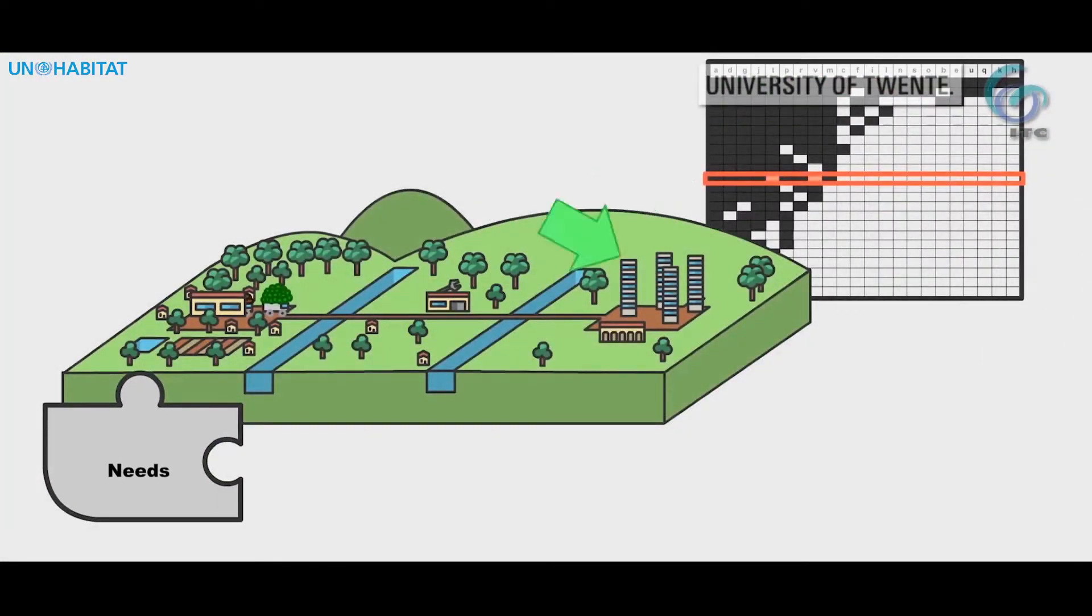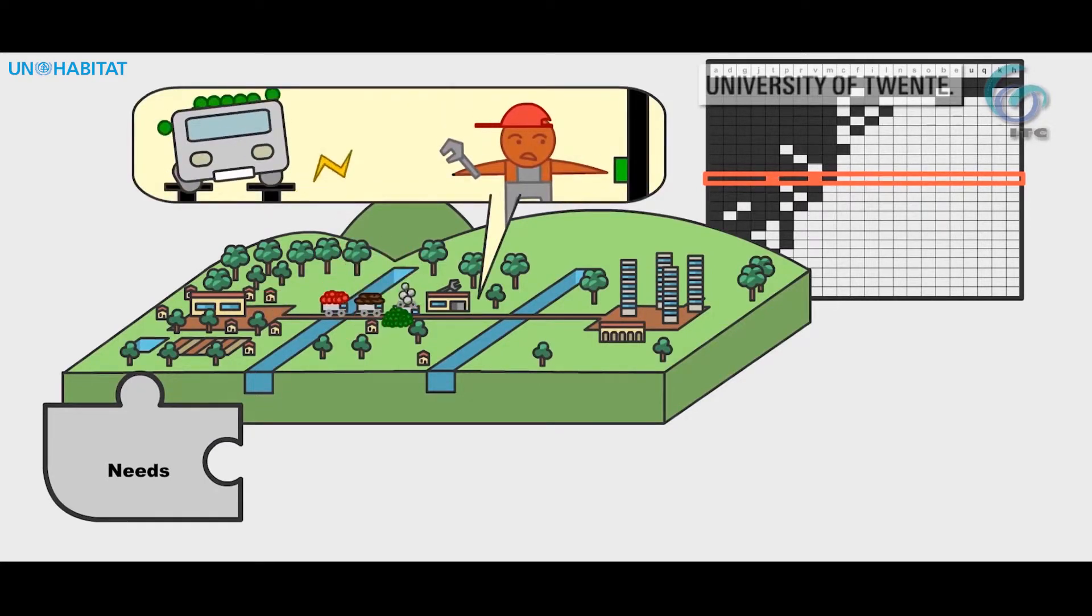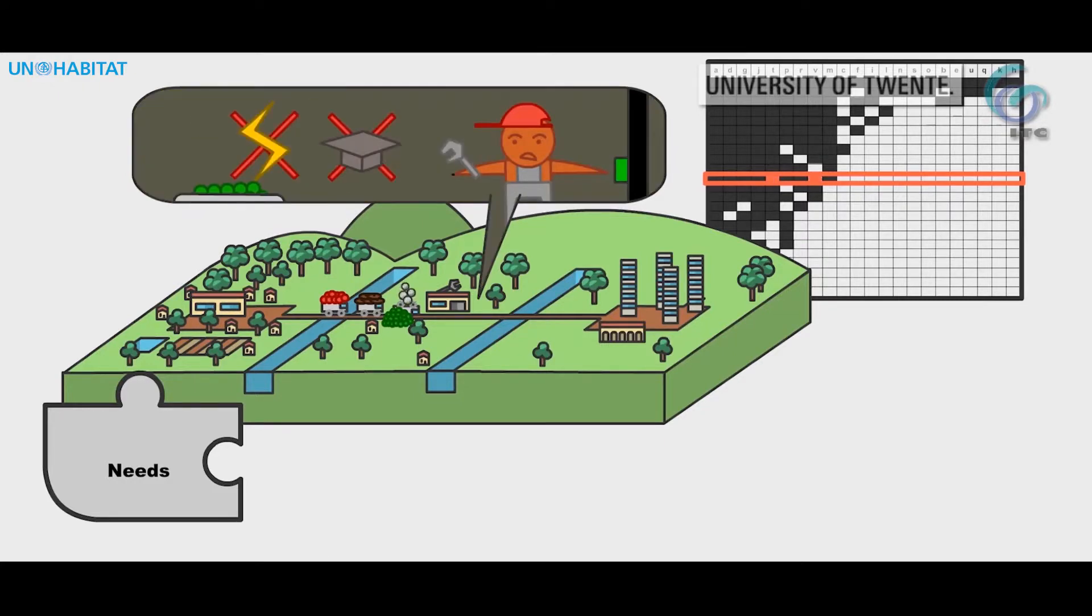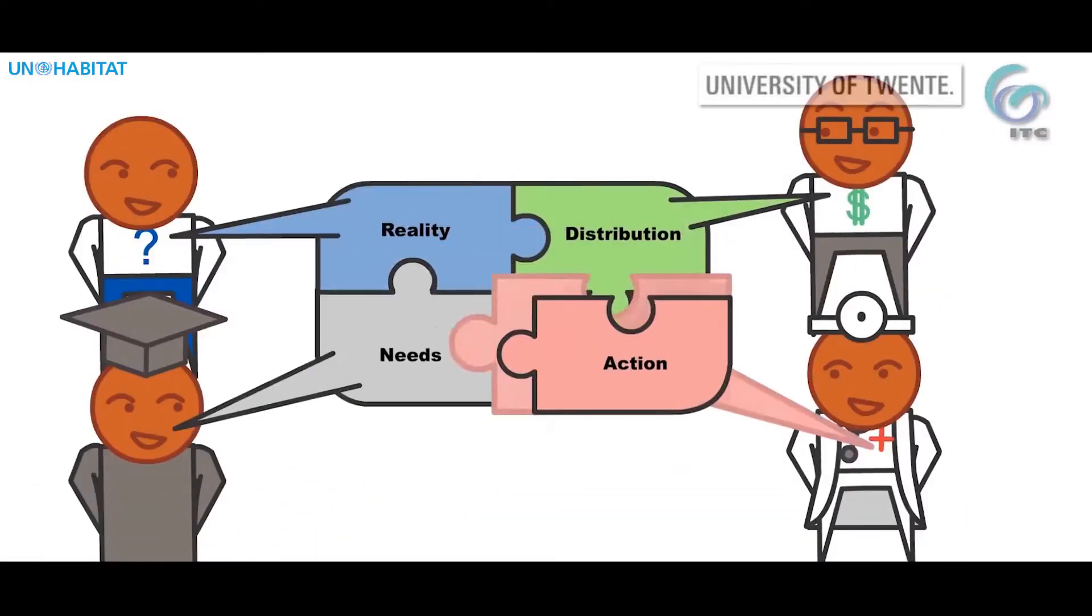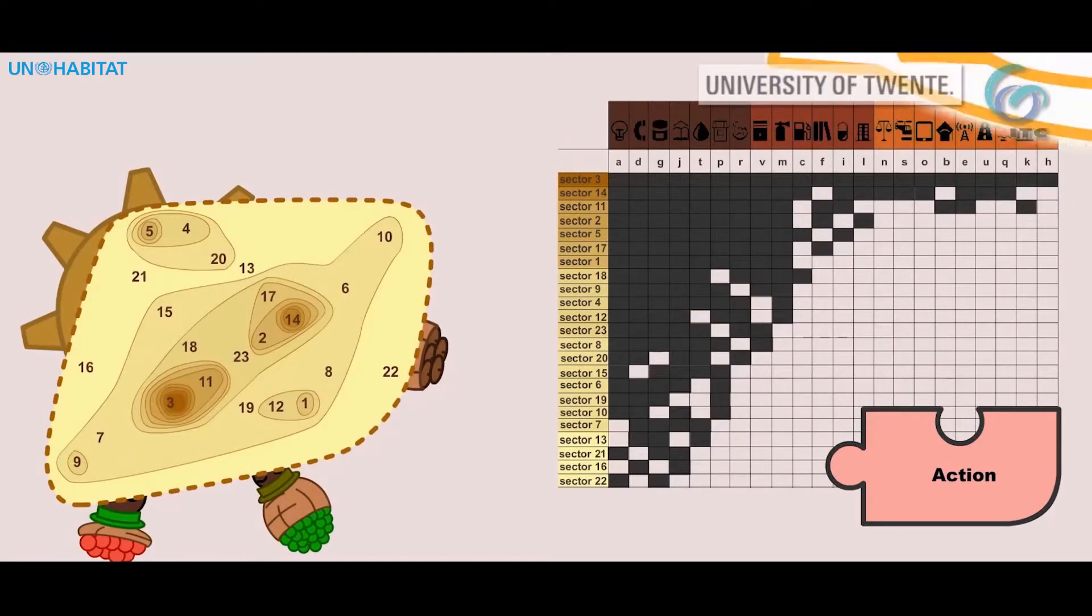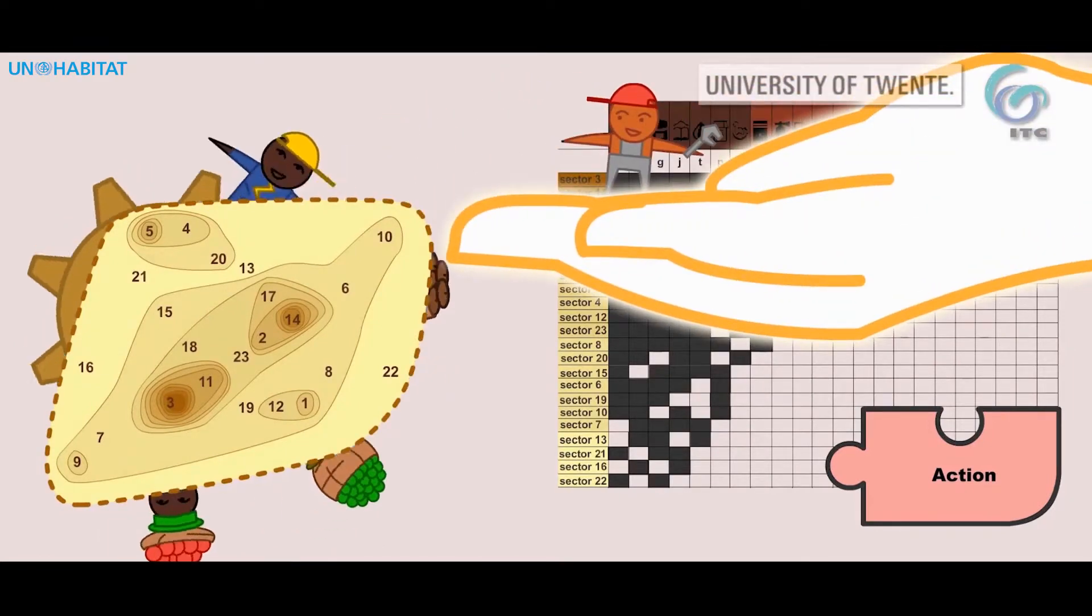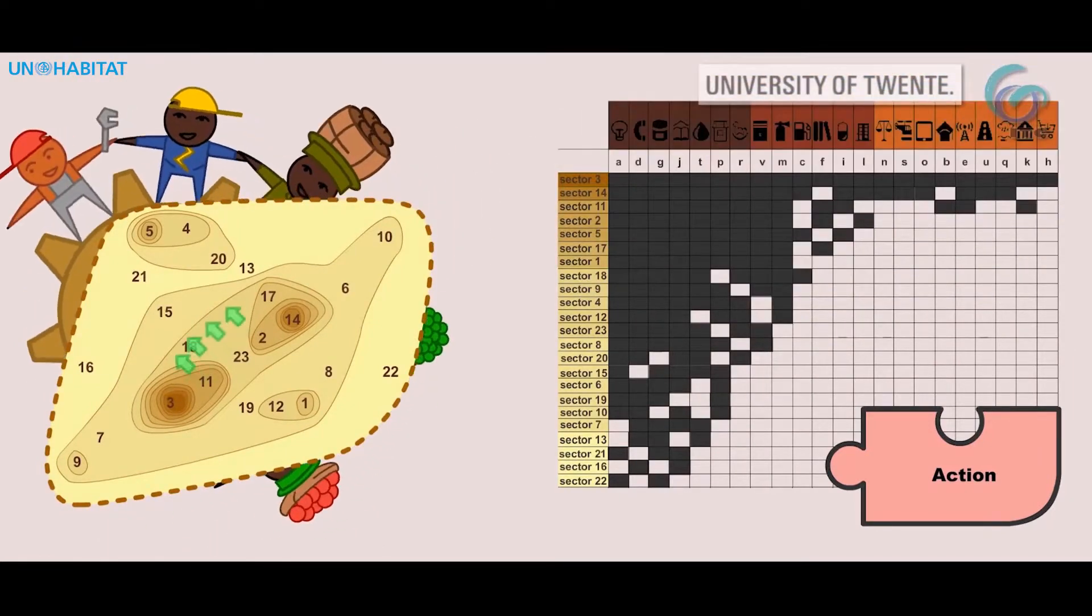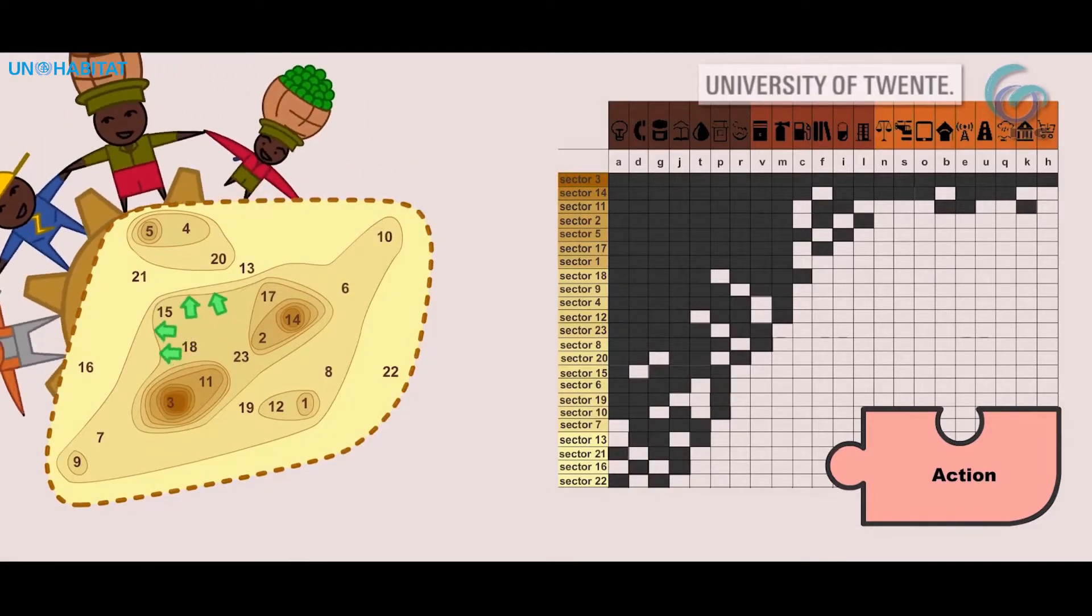Thirdly, we see gaps in rows and can conclude whether a single municipality has all the functions it needs. And fourthly, we can plan for action, how municipalities can move from basic to intermediate level or from intermediate to central level.